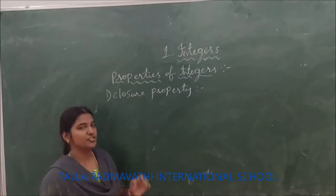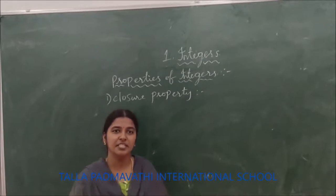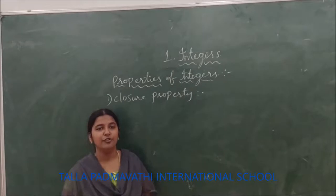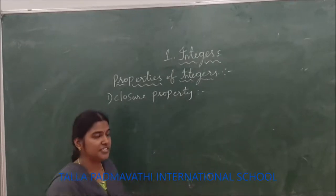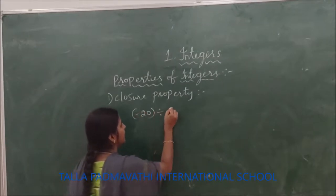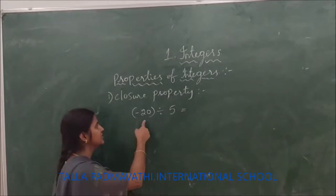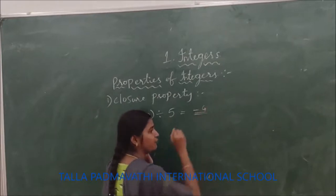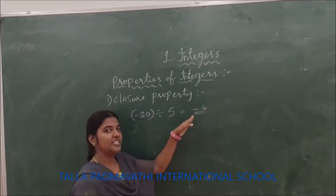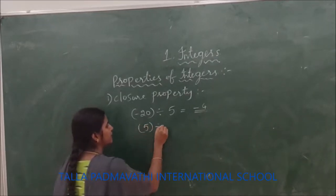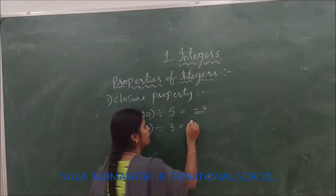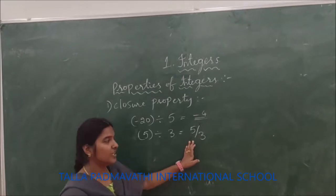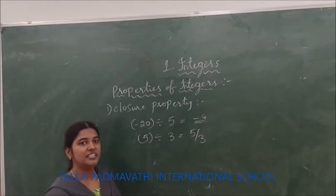Now let us see the properties of division of integers. The first property is the closure property. If you take any two integers A and B and divide them, you need to get an integer. For example, minus 20 divided by 5 gives minus 4, which is an integer — satisfied. But if you take 5 divided by 3, the answer is 5 by 3, which is not an integer. So closure property is not satisfied under the division of integers.